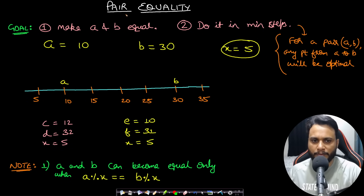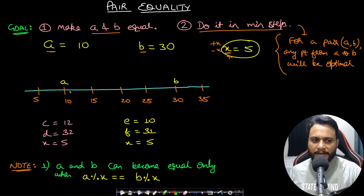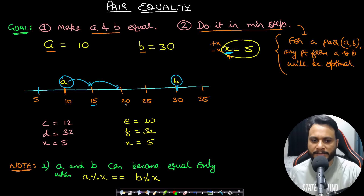Let's look at key observations to optimize. Given two elements A and B with operation value X, will they ever meet? On a number line with step size five, if A is at ten and B is at thirty, starting from A and taking plus X repeatedly: ten, fifteen, twenty, twenty-five, thirty — it takes four steps to reach B. The same four steps apply going from B to A, since the step size is symmetric.